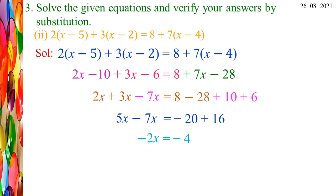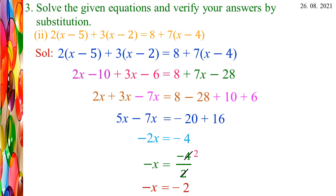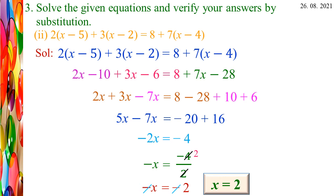Different sign: subtract and replace the greater number sign, we get -4. So -2X = -4. Transposing 2 to the RHS, it becomes division: -X = -4/2. Cancel the common factors: 2 twos are 4. We get -X = -2. Cancel the negative signs: minus minus cancel. So X = 2. The X value is 2.